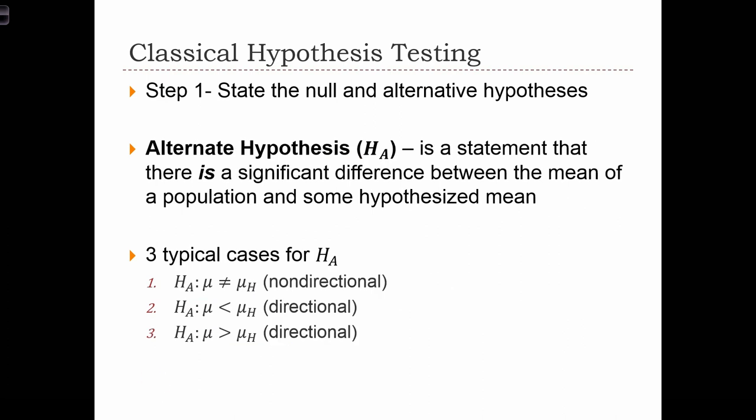The alternative hypothesis is a statement that there is a significant difference between the mean of a population and some hypothesized mean. And in this, we have three different cases for an alternative hypothesis. The first case is that the population mean does not equal that hypothesized mean. This is called a non-directional case because the difference here could be positive or negative.